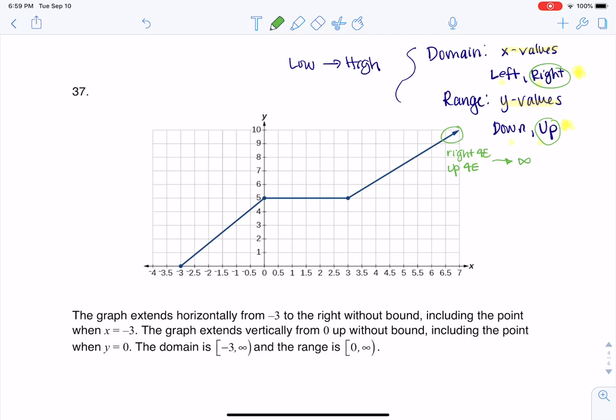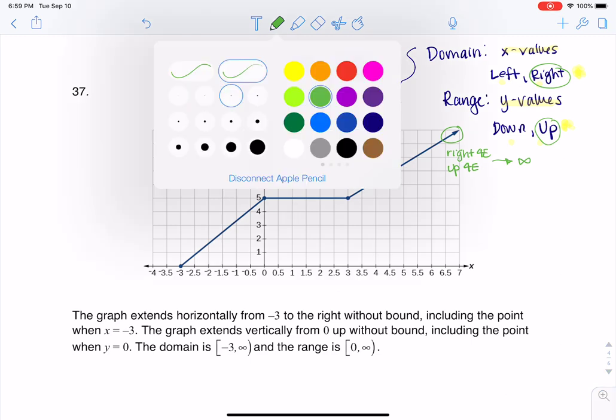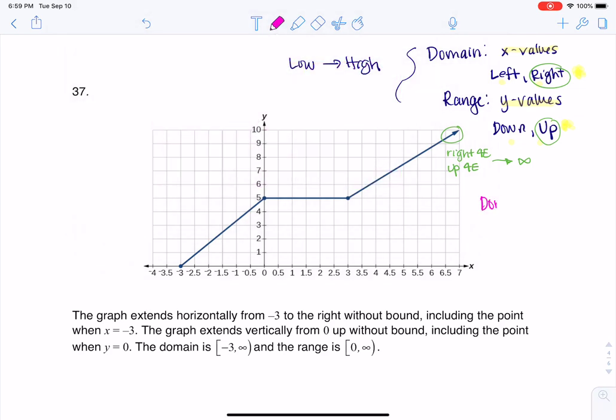So when I think about my domain so far, and I'll color code this again, let me go pink. So I know so far for my domain, I don't know what the left bound is, but I know the right bound is going to be an infinity, and an infinity always gets parentheses. And the same is true for range. The range, I don't know what the left bound is, or the low bound, but I do know the high is going to be infinity. So I've got the right side of my intervals, or I should say the high side of my intervals. Now we've got to figure out the low side.